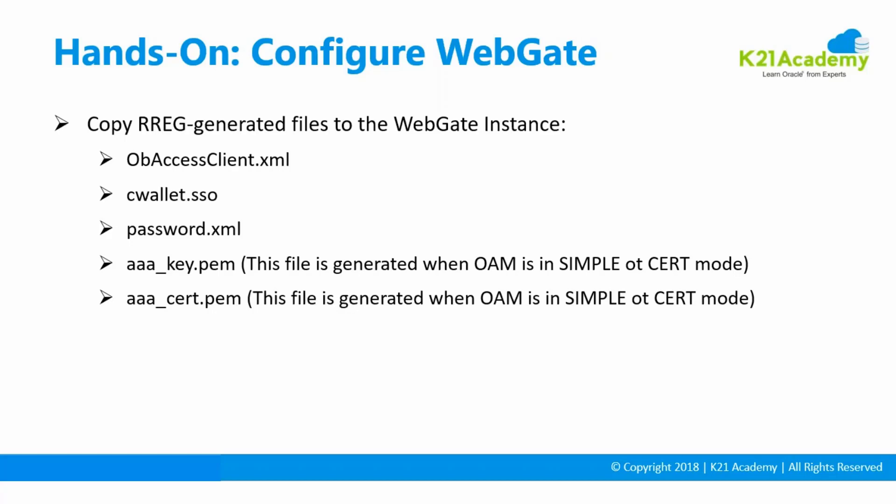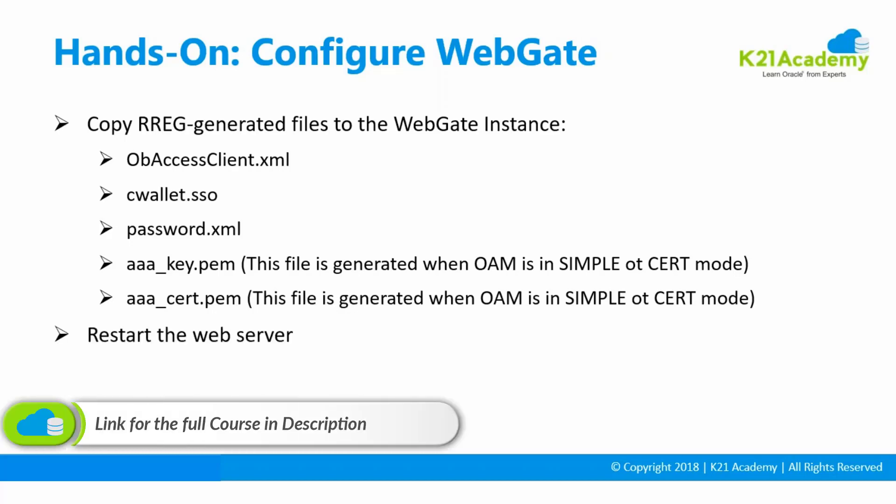The obaccessclient.xml is the main file where the connection details from the WebGate to the OAM server are stored. cwallet.sso is a wallet file - a store where all passwords, credentials, and keys are stored. You may recall that you can set a password for Oracle WebGate; those passwords and key files will be stored in cwallet.sso. password.xml also holds important passwords. WebGate can call Oracle Access Manager using simple or cert mode, meaning data is encrypted between WebGate and OAM, with those SSL certificates stored in the key and cert files.